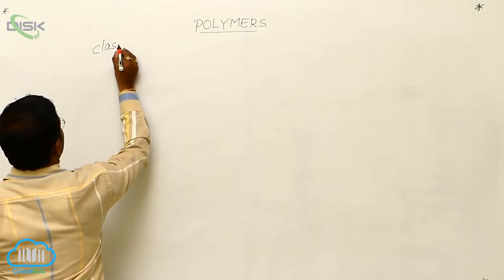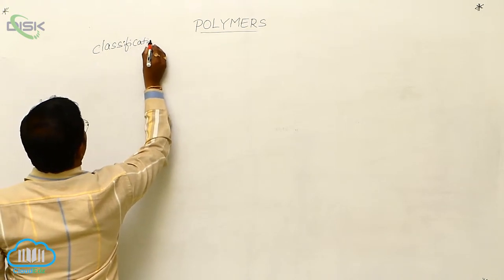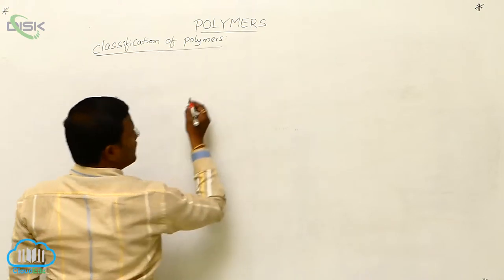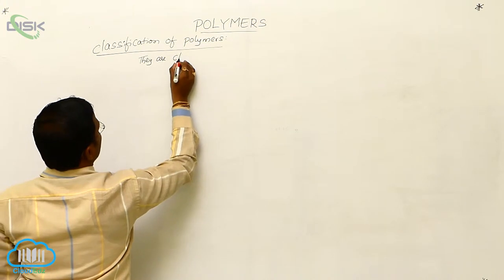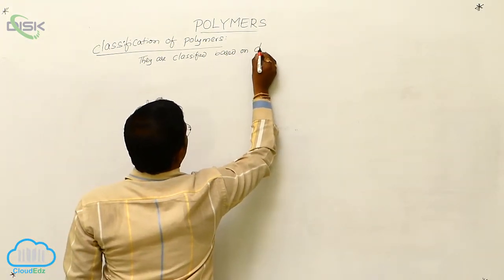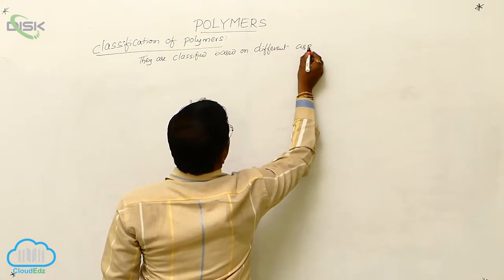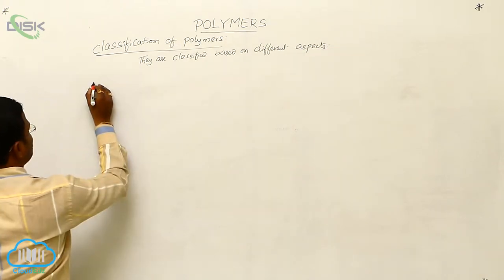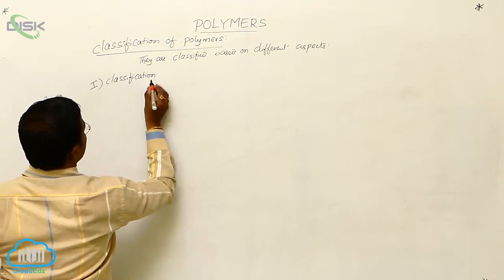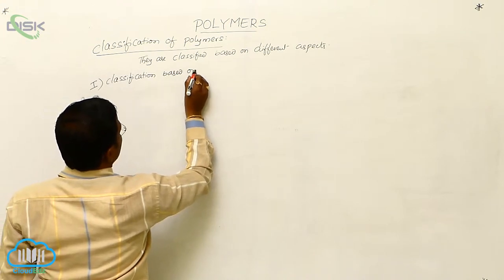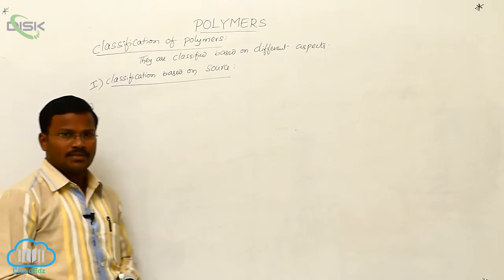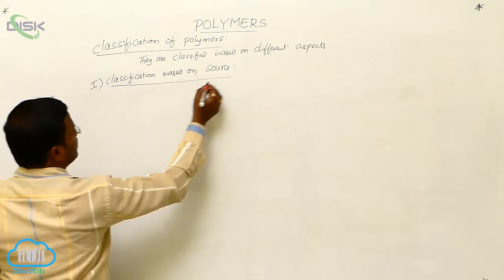Let us consider some of the classifications of polymers. They are classified based on different aspects. Let us discuss some of the classifications here. The first type of classification is the classification of polymers based on source — that is, based on the availability of polymers, these polymers are classified into three types.